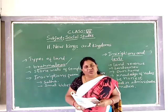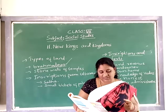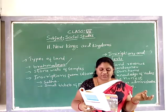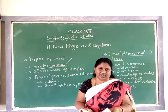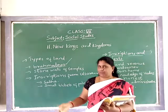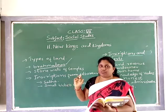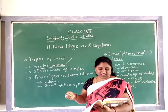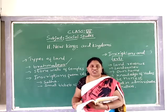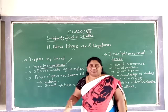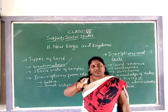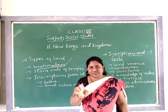One such inscription from Uttaramerur in Chingalput district, Tamil Nadu - these are old place names - provides details about how the Sabha was organized in Chola times. This inscription gives information about how the Sabha was organized in that Tamil Nadu place.